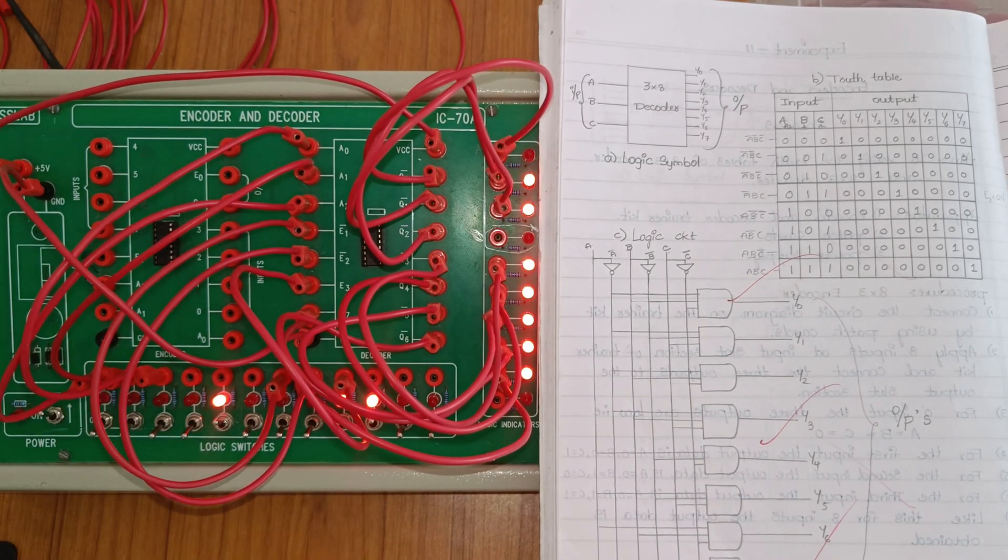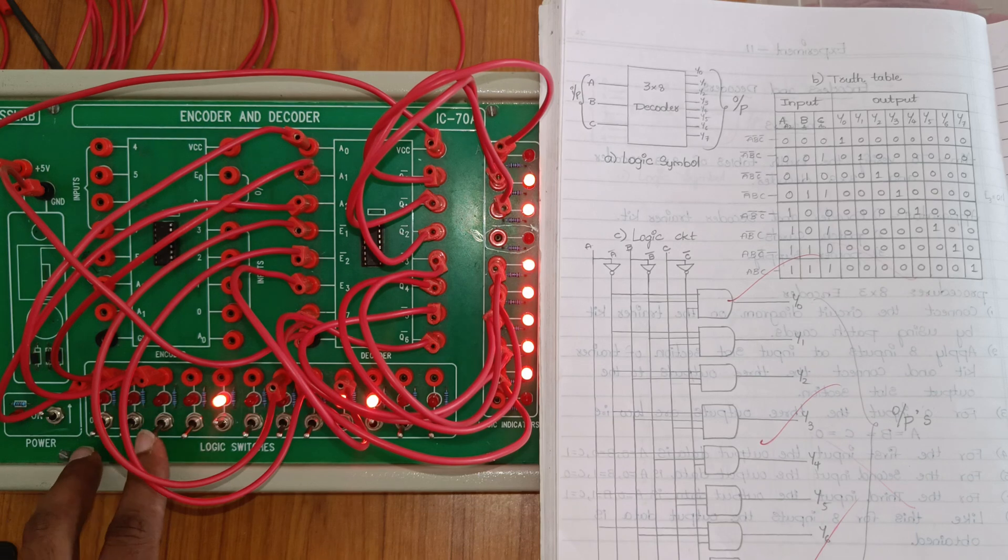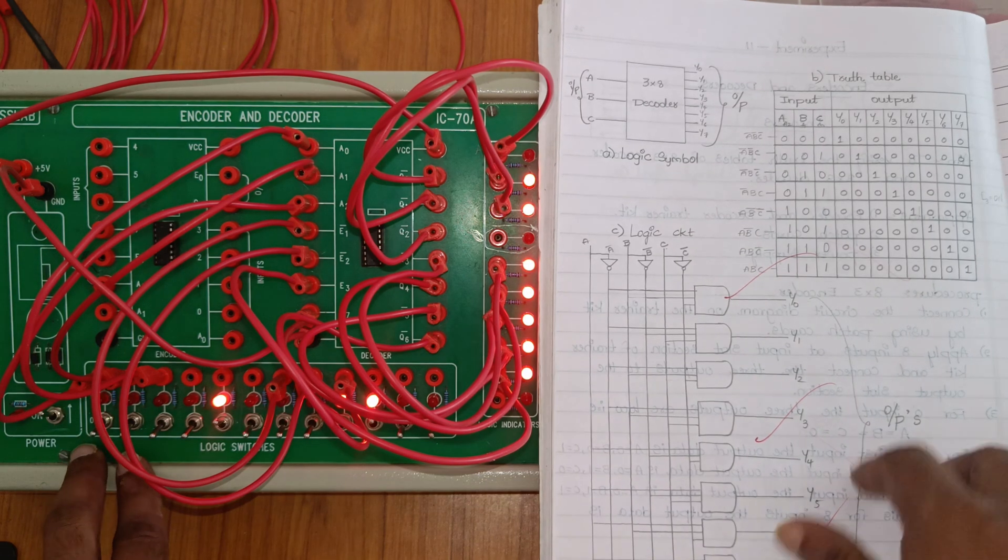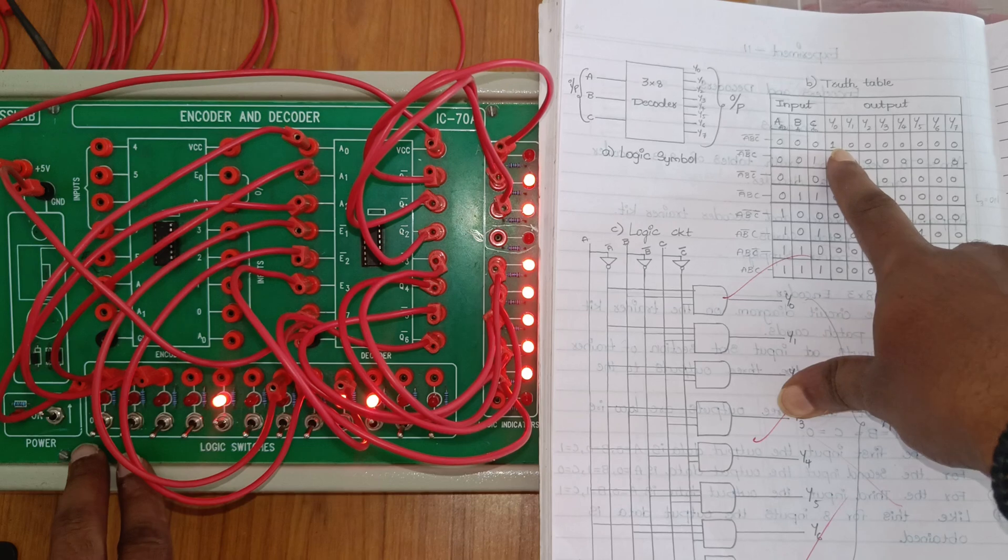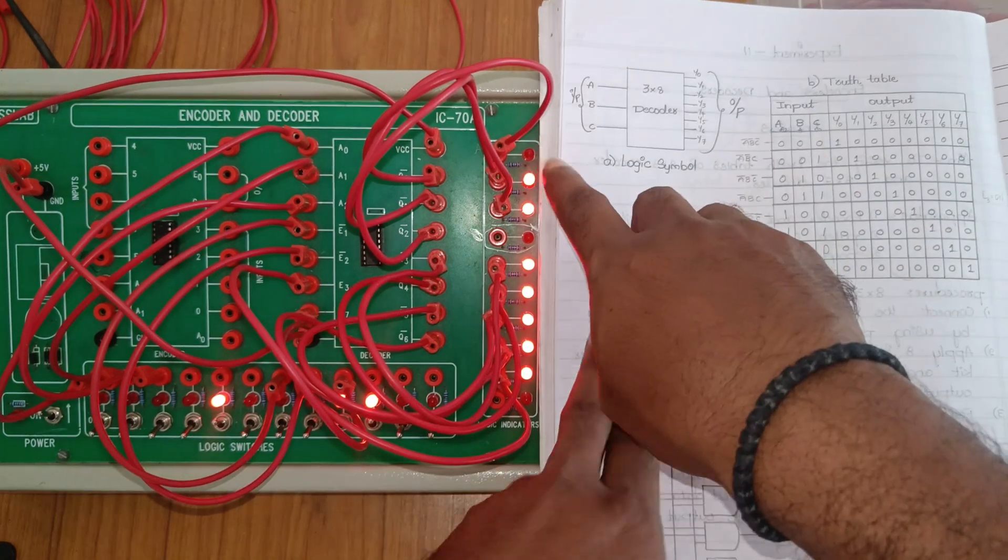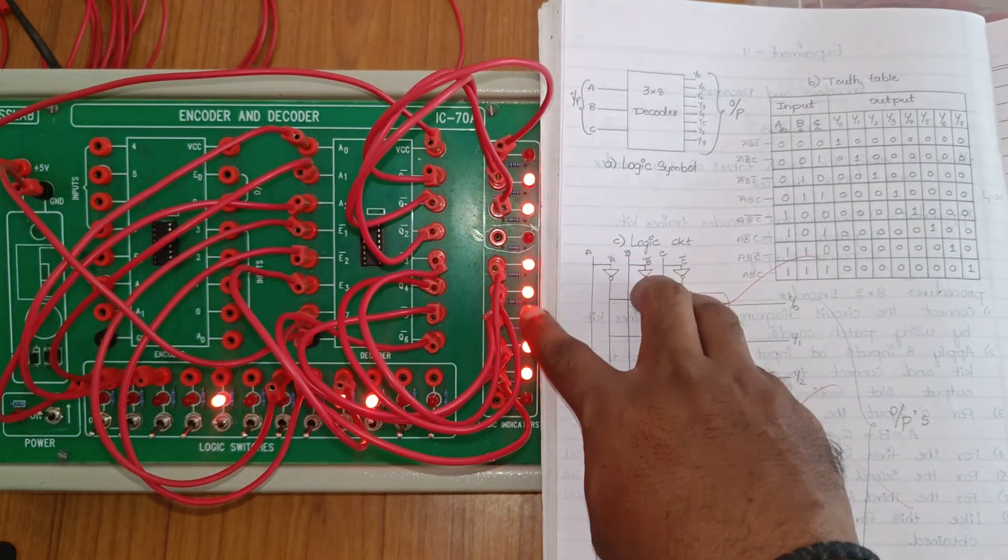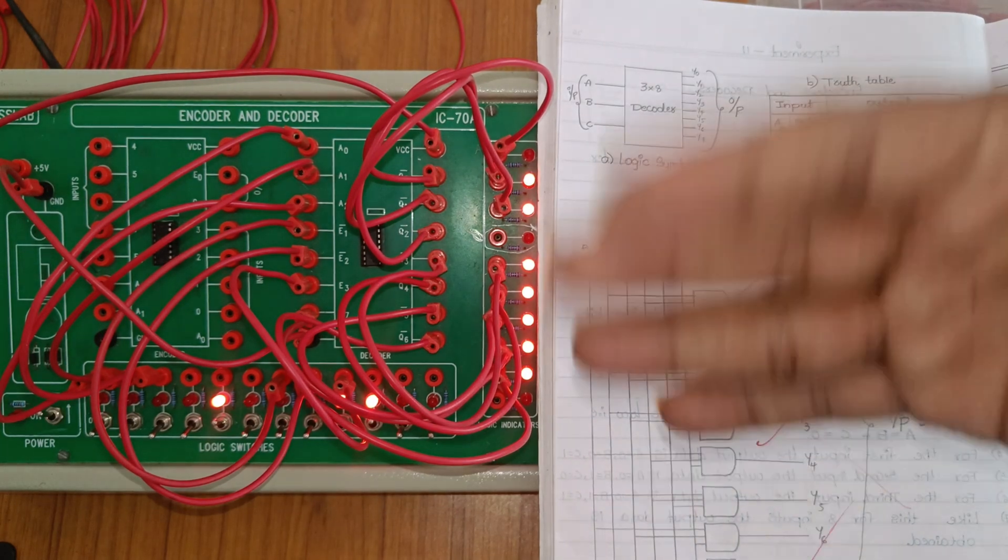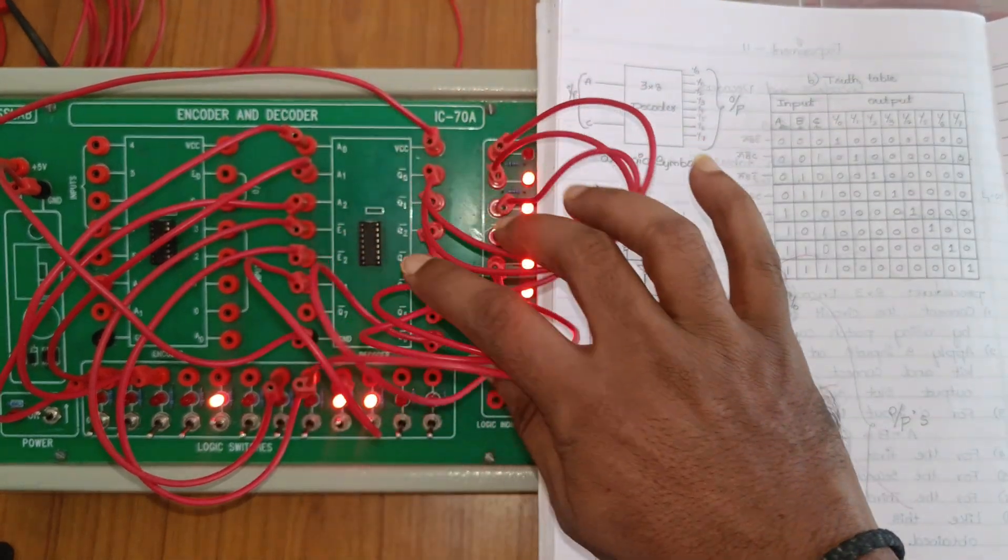When the binary input data is 000, the input values are zero. Only Y0 data is presented - it shows one, remaining all are zero or ones depending on complementation.